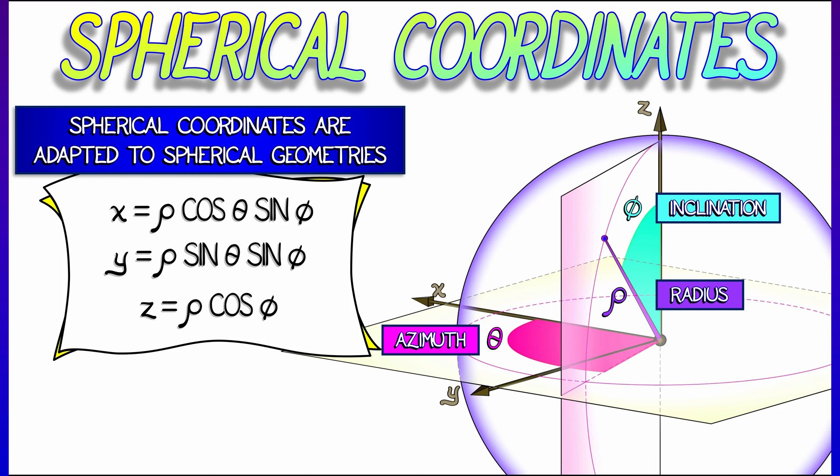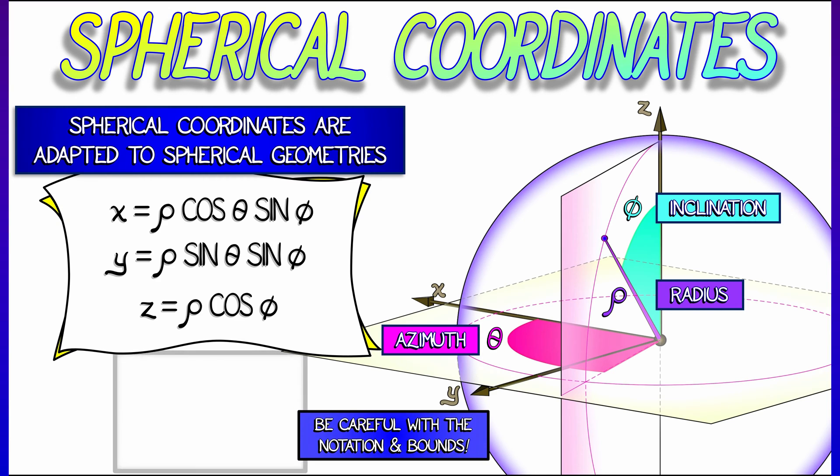Be careful with the bounds on these formulae and with the notation. Some are obvious. The radial coordinate has to be bigger than zero. The polar angle, the azimuth, goes from zero to two pi.